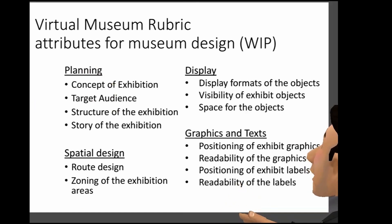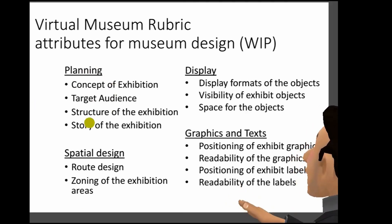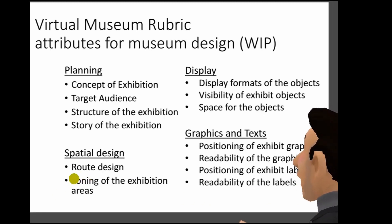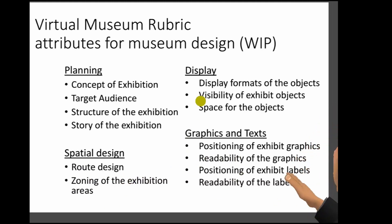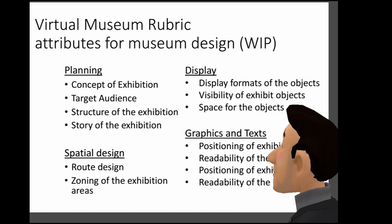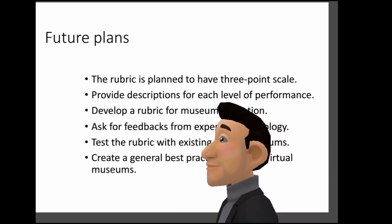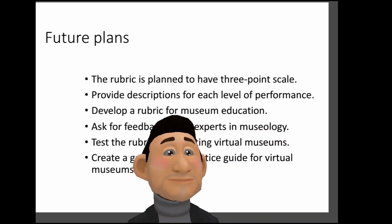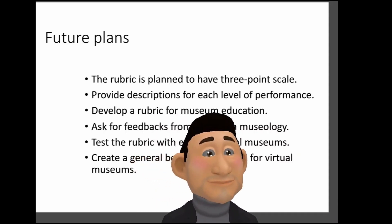The first one is about exhibition planning such as the concept of the exhibition and target audience. The second one concerns the design of the exhibition space including route design for visitors. The third one is about how you display the objects. And the fourth one is about graphics and text for guidance and labels. The rubric is planned to have a three-point scale and will provide descriptions for each level of performance.